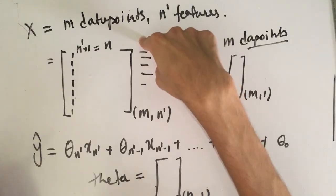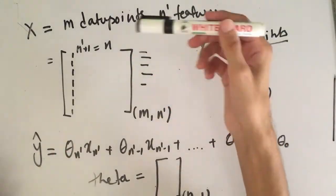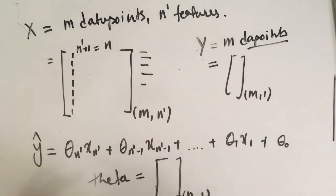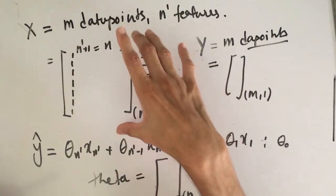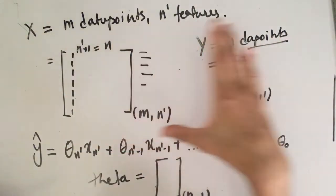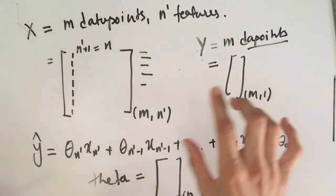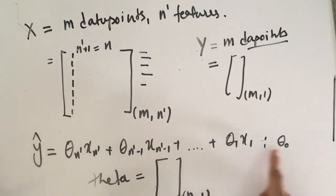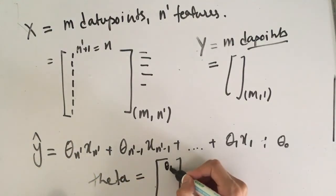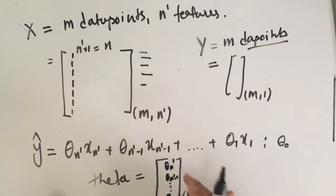Let's summarize with a house price example. X is our data set where columns are features — such as size of the house, number of bedrooms, square footage, number of rooms, garage capacity, etc. — and rows correspond to each house. For M houses, there is one prediction per house which is the price, stored in the label Y. The theta parameters and X features together give the linear regression predictions.